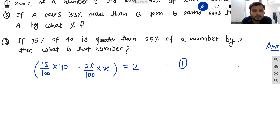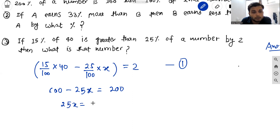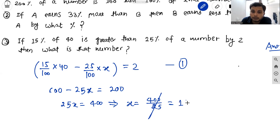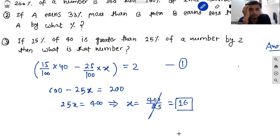Taking 100 as common and moving to the right-hand side: 15 times 40 is 600, so 600 minus 25x equals 200. Therefore 25x equals 400, which gives x equals 400 divided by 25, so x equals 16. You can first pause the video, try to solve these questions, and then check the solutions.